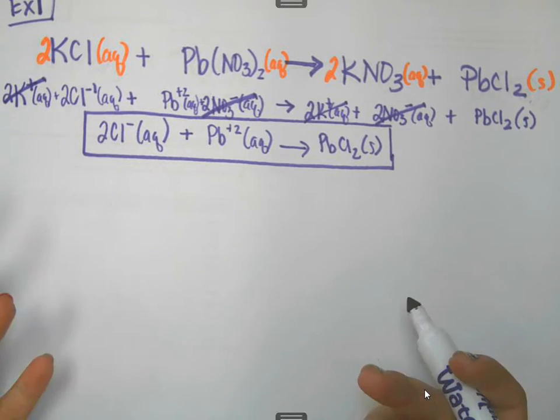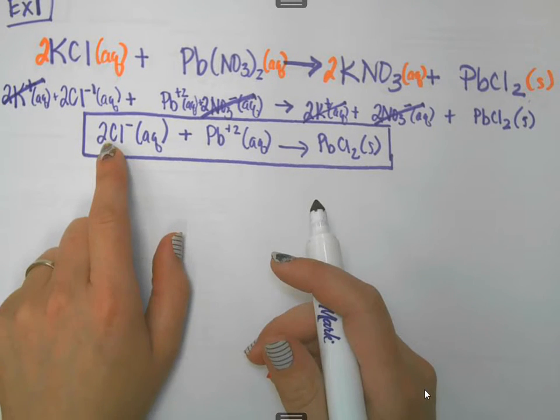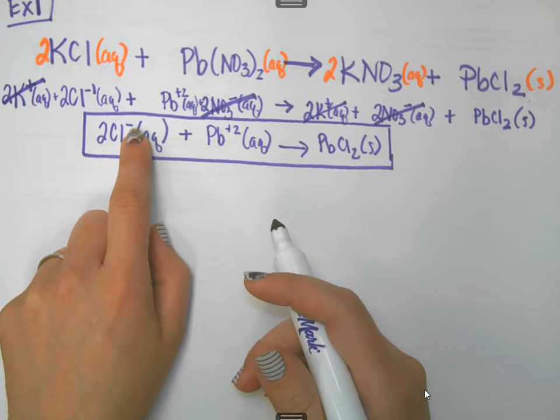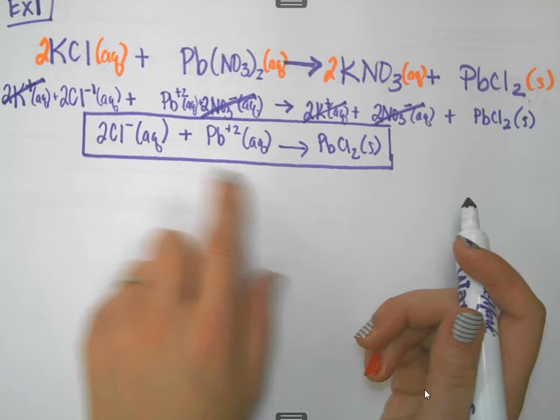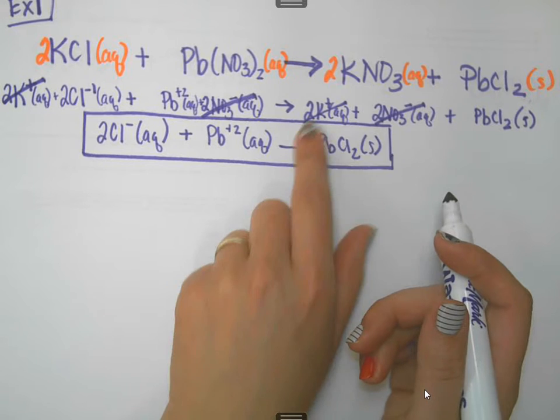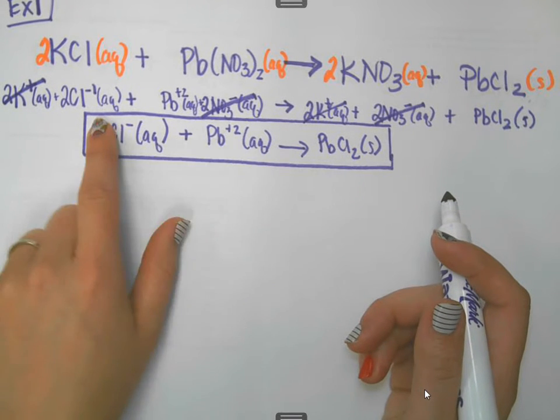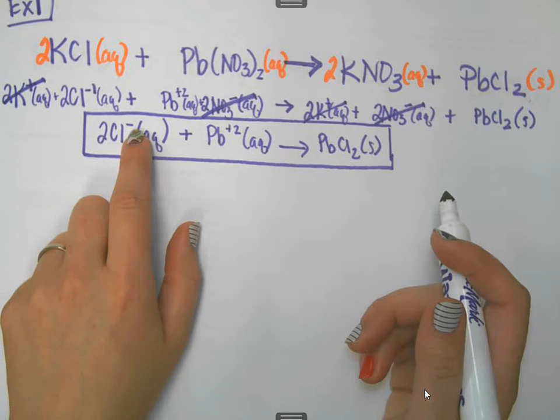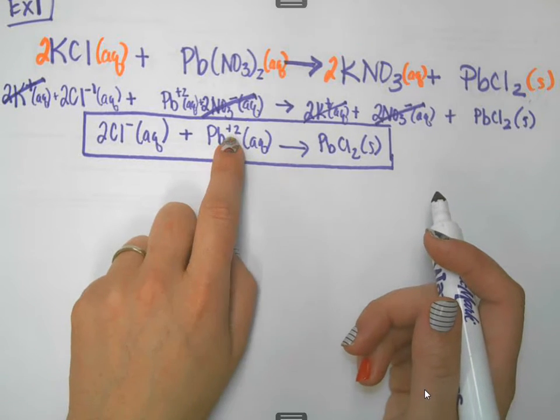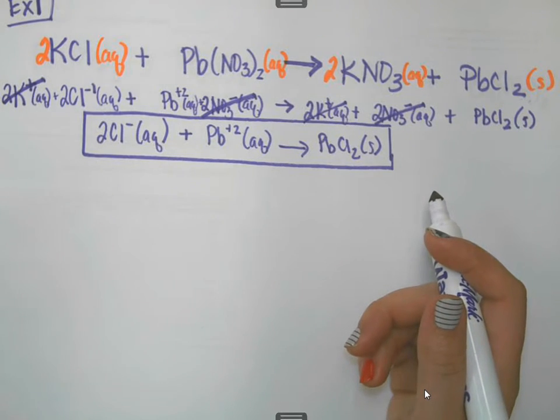You can check yourself in one way here. You can check for balance. If I have two chlorines over here, whether they have a charge written with them or not, it doesn't matter. I should have two chlorines on both sides, and I do. I have one lead and one lead. And charges should also balance. The charge of an ionic compound is zero. And that means the charge of this side, then, has to add up to zero. Well, I have two negatives plus a positive two, and negative two plus positive two adds up to zero. So, there's two different things right there, checking for balance, that help me know that I did this correctly.